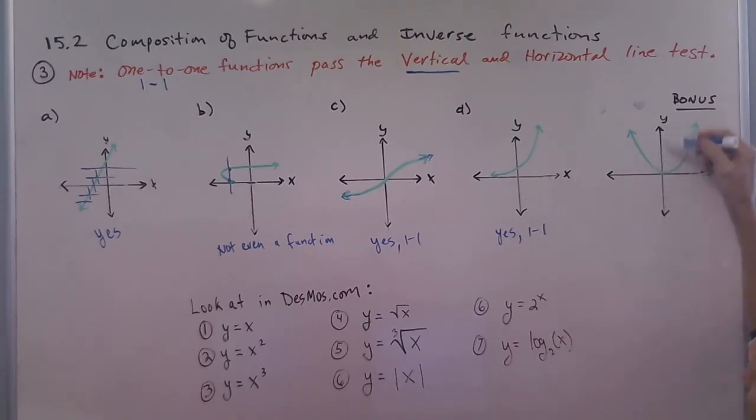So here, this passes the vertical line test. But if you look, it fails the horizontal line test. So this one is not one-to-one. This is a bonus one that wasn't on your worksheet.